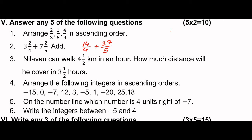The denominators 4 and 5 are not the same, so we cross multiply. We get 37 times 4 is 148, divided by 4 times 5 which is 20. So one term becomes 148/20.